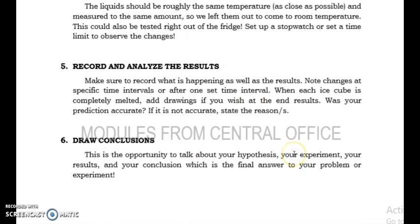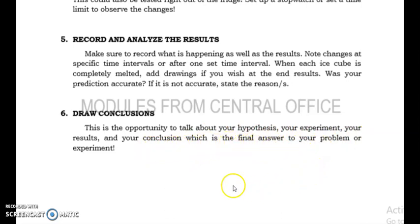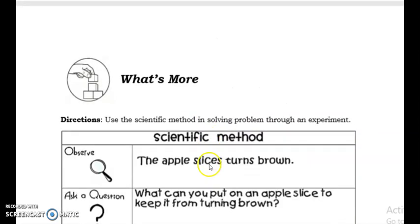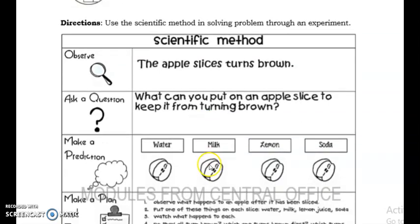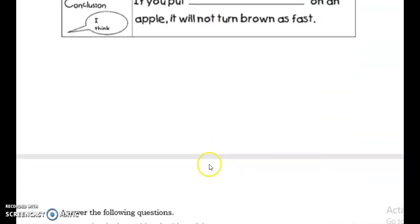The sixth step is to draw conclusions. This is the opportunity to talk about your hypothesis, your experiment, your results, and your conclusions — which is the final answer to your problem or experiment. We also have an activity here — just run through that.